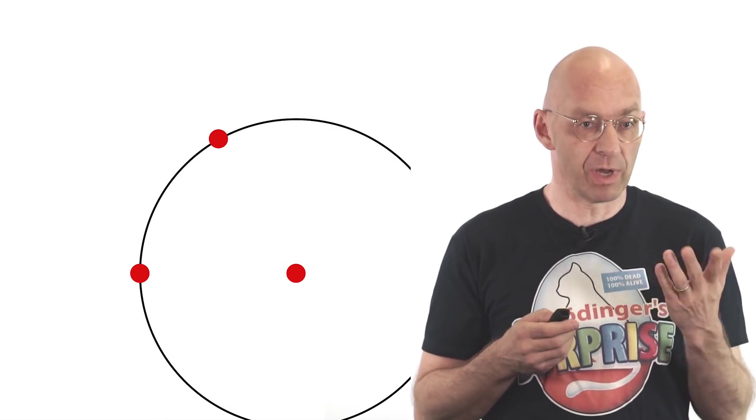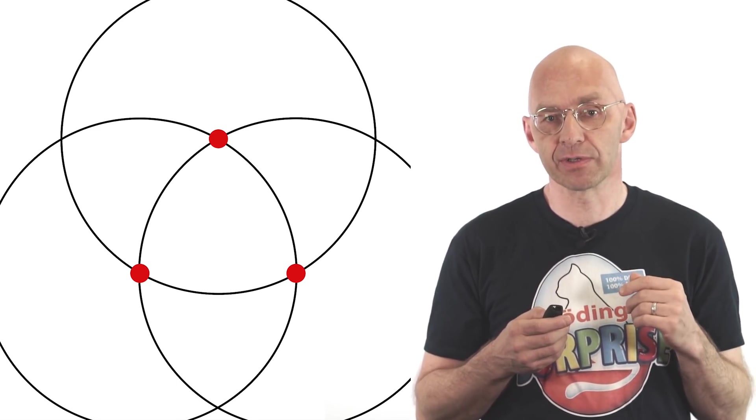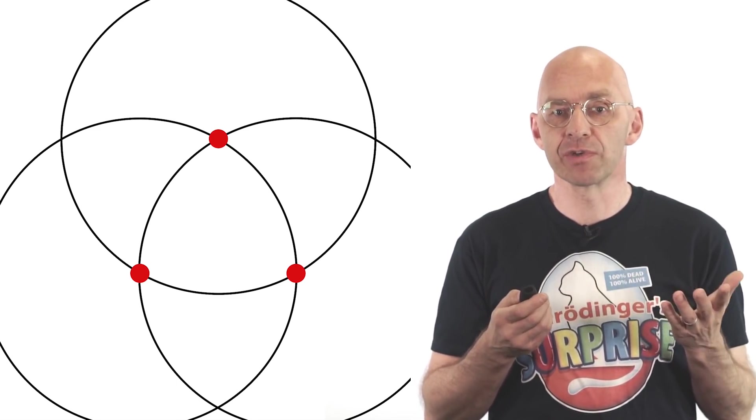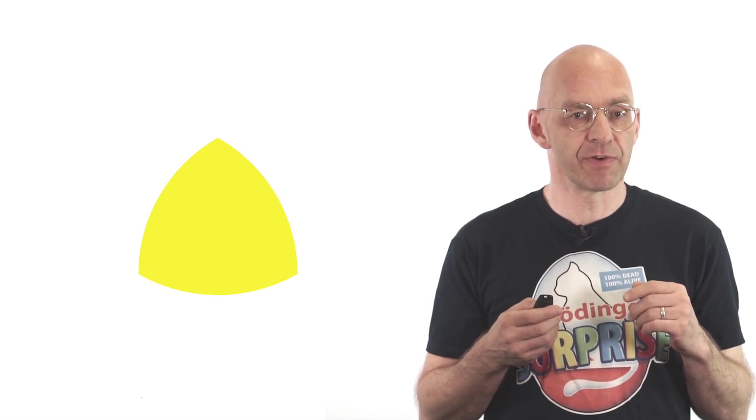To construct our cabins, start with three corners of an equilateral triangle and draw just the right sized circles centered at the corners like this. One, two, three. Three corners and three circles. And the cabin shape we are after is the curvy triangle in the middle. This shape is called the Reuleaux triangle, named after the 19th century German engineer Franz Reuleaux. The constant width of Reuleaux's triangle is just the common radius of the three circles we began with.